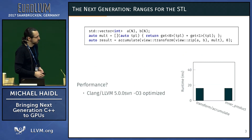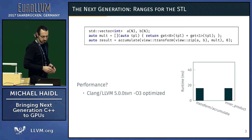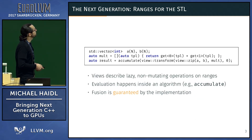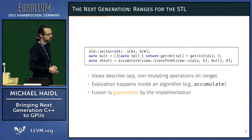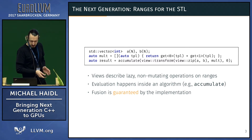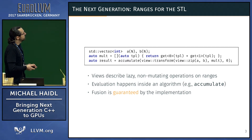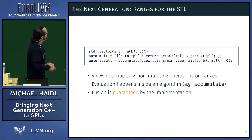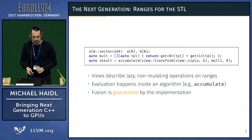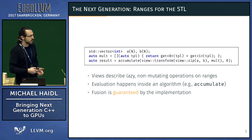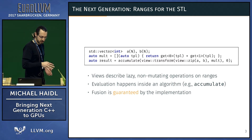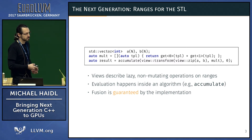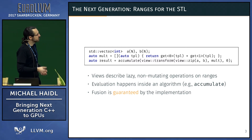How does it work? There is a concept called views — they are lazily evaluated and non-mutating operations on ranges. The evaluation of the transform, the zip, and the lambda multiplier all happens in the executing algorithm — in this case, in accumulate. The fusion doesn't happen in the compiler; it's up in the implementation and is guaranteed to be fused, because a view cannot evaluate on its own — it's in the algorithm.